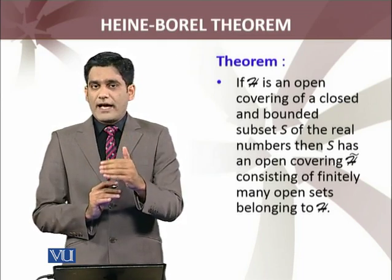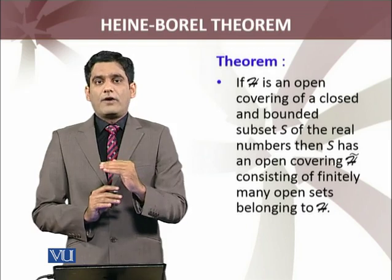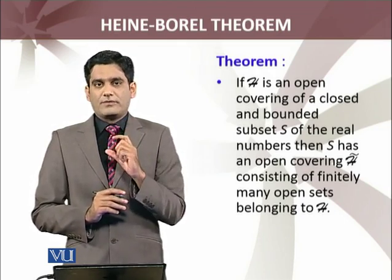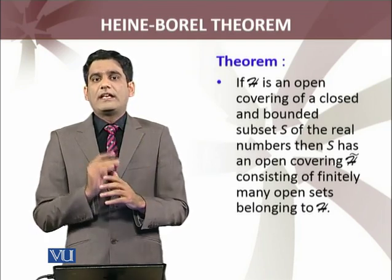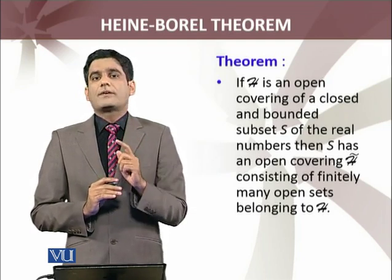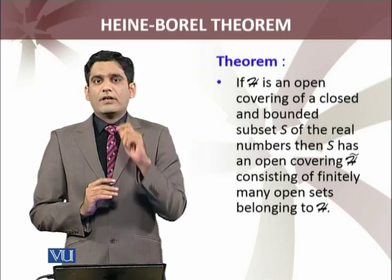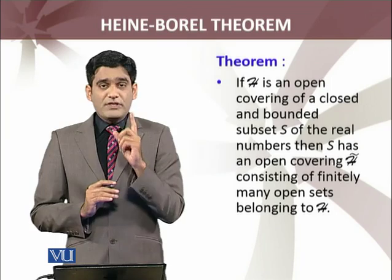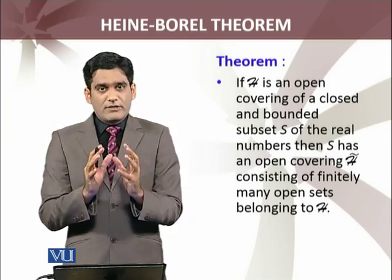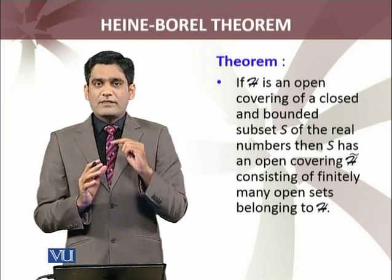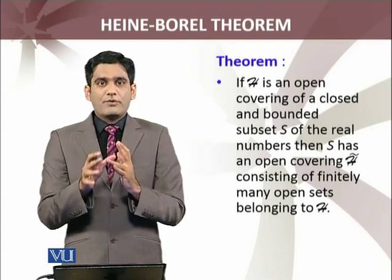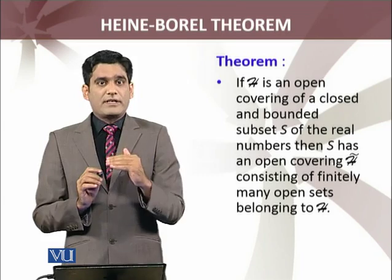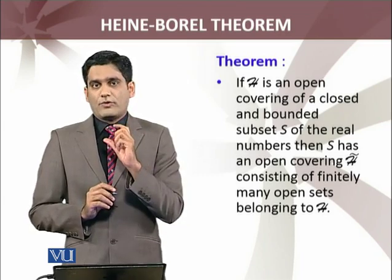It means that we will have a finite sub cover of that set which is closed and bounded — we are talking about the set of real numbers. This is the statement of the Heine-Borel theorem: if H is any open cover of a closed bounded subset, then H must have a sub cover, denoted by H̃, which contains finitely many members of H. The key point is that H itself need not contain finitely many open sets, but if your subset of real numbers is closed and bounded, then we are able to find a finite sub cover of that collection.